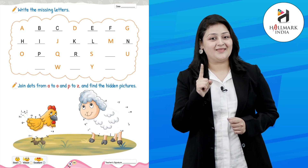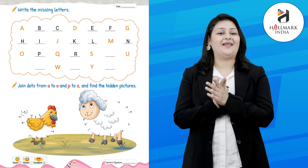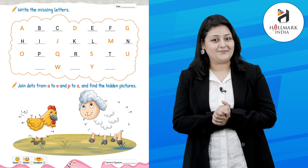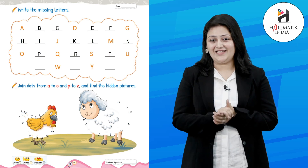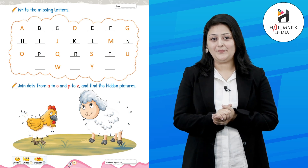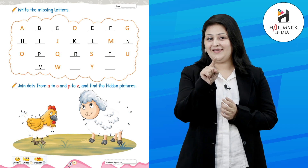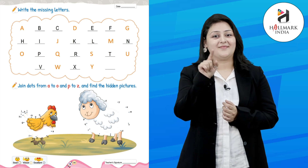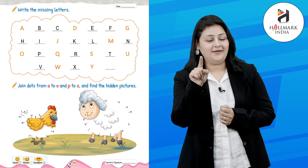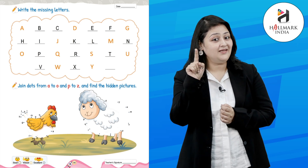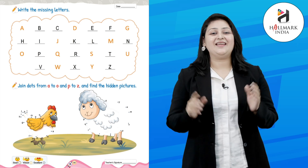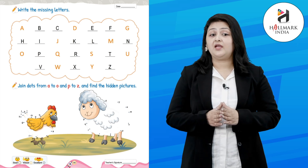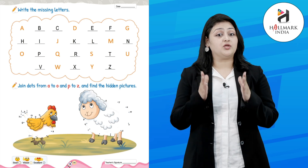Q — great! R, S — tell me T — yes! U — you tell me — V, W, X, Y, Y, Z — great! Okay kids, now we need to join the dots from A to O, and P to Z, and find the hidden pictures.